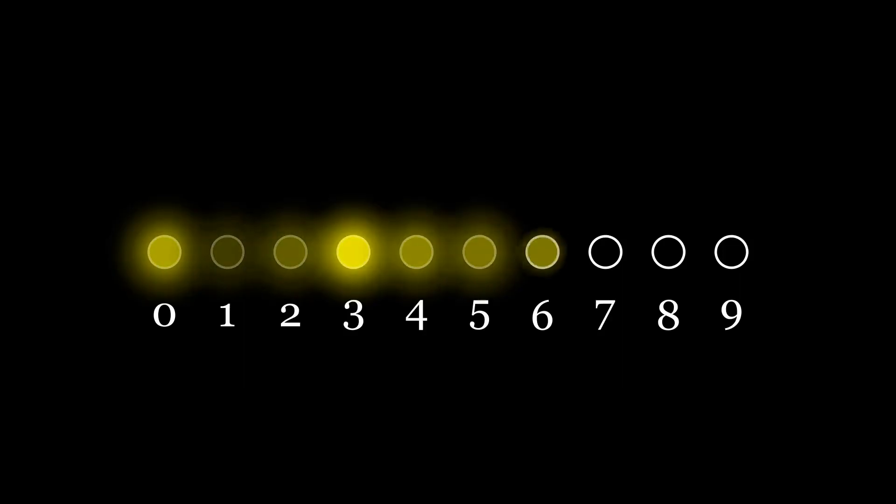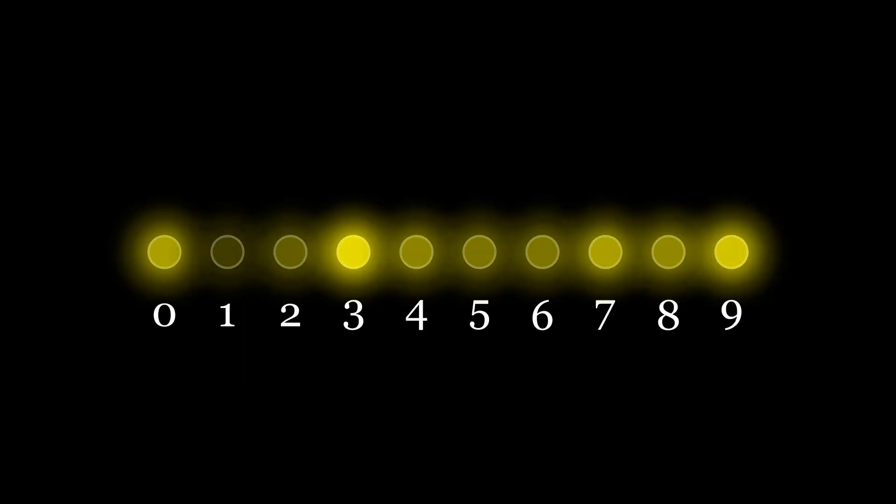You could store each digit with a single vacuum tube with 10 different voltage levels. That would certainly save on tubes. But remember, vacuum tubes are unreliable. You can't really trust them to have accurate voltage levels other than on and off.